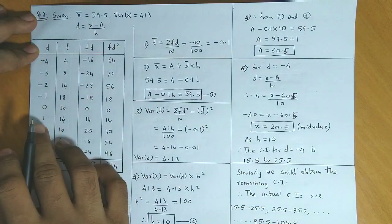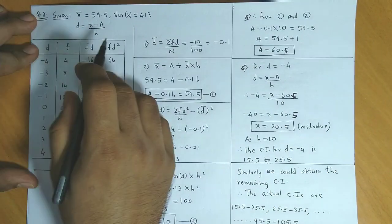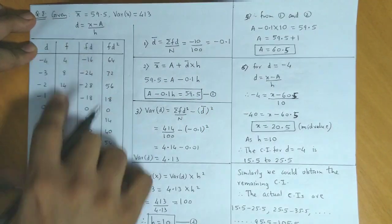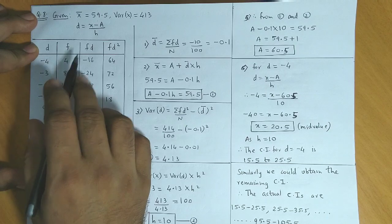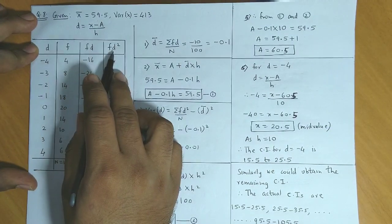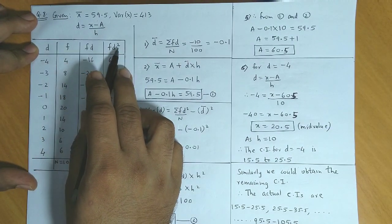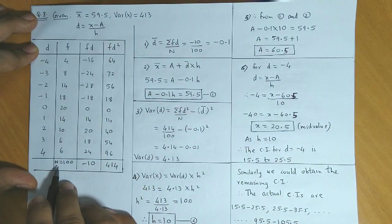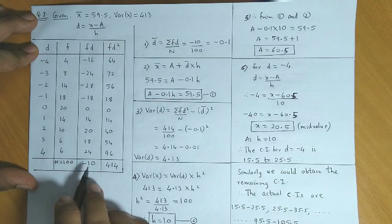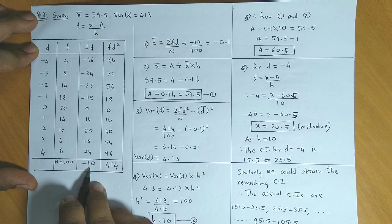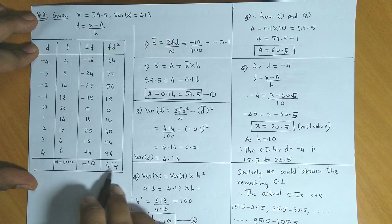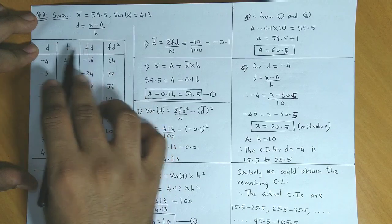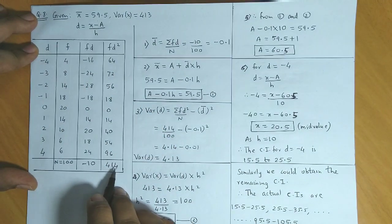So let's begin. First you have d, next column will be frequency, then fd, and last column will be f times d squared. Once you've prepared these columns, the total frequency is 100, fd total is minus 10, and fd squared is 414. Remember fd squared is fd into d.